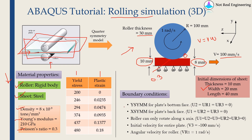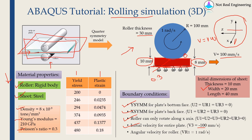We need to define five boundary conditions. First, Y symmetry on the plate's bottom surface. Second, X symmetry on the plate's back face. Third, for the roller, all degrees of freedom except UR1 are set to zero — it can only rotate along the X axis. Fourth, the initial velocity of the entire plate is set to minus 100 mm per second, since the sheet moves in the negative Z direction. Fifth, the angular velocity of the roller is 1 radian per second.